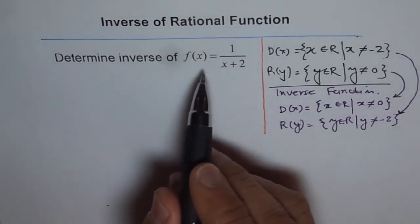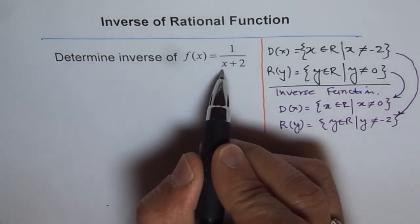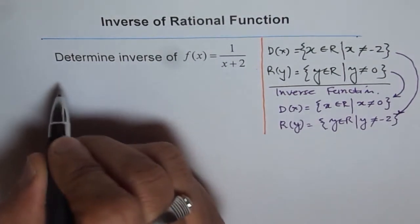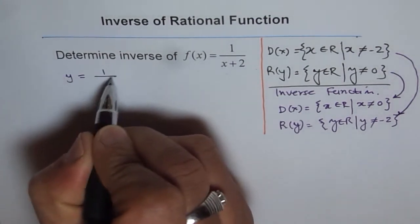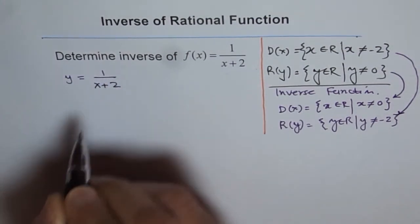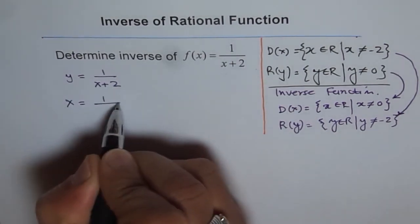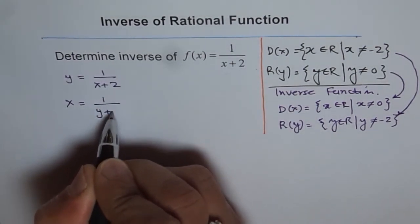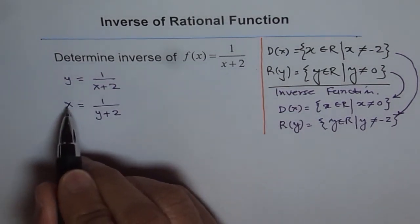Now to find the inverse of this function, we will replace x with y. So we will write initially y equals 1 over x plus 2, and now we are going to swap and we will write x equals 1 over y plus 2. Now the idea is to get y from here. The best way of getting it is to cross multiply.